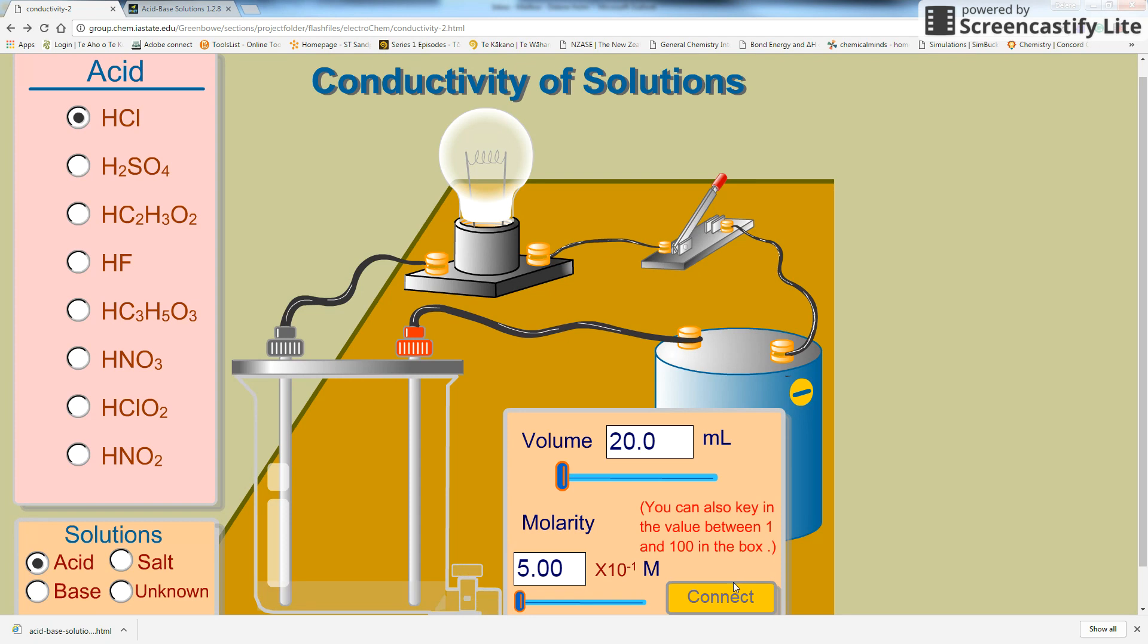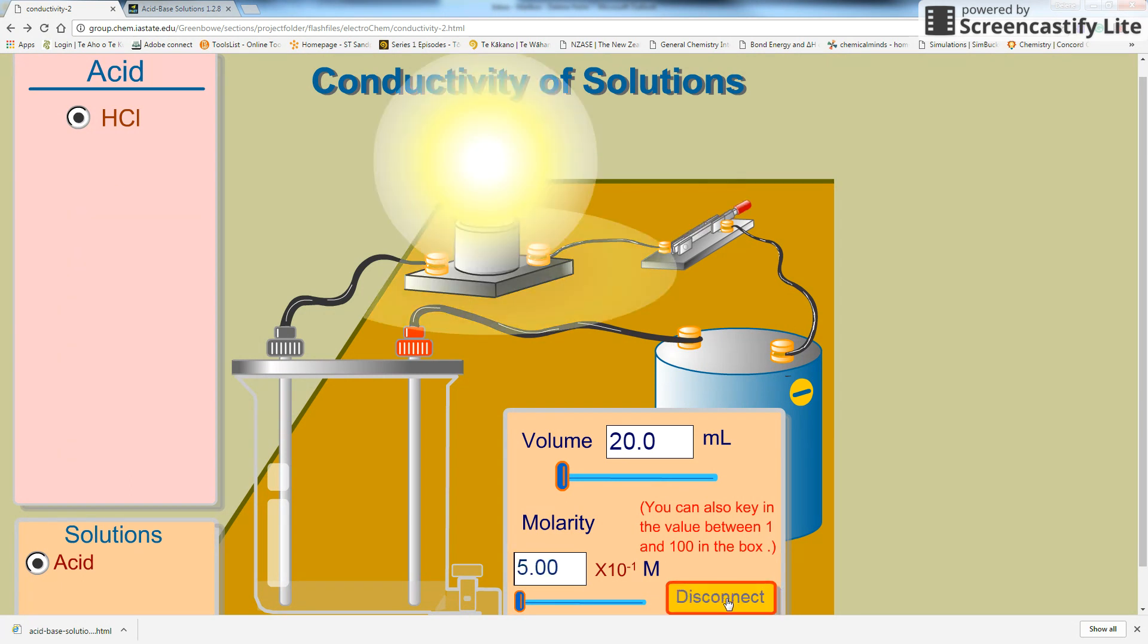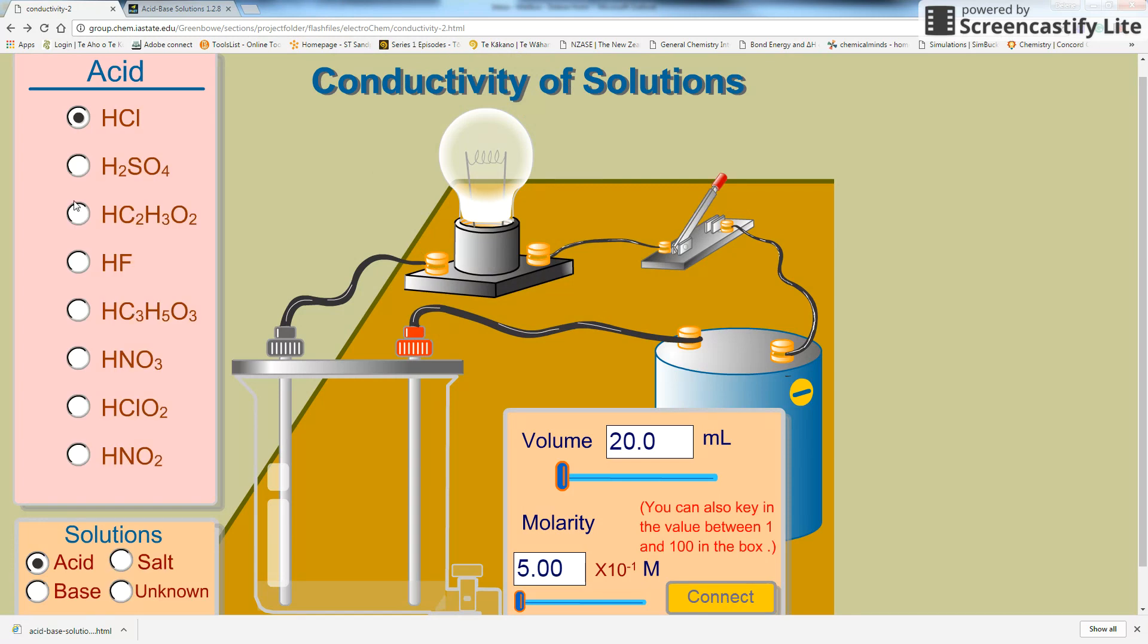And what you do is you can choose an acid to find out if it's a strong acid, and if it is, the light bulb will glow brightly. Or if it's a weak acid, then you don't expect the light bulb to glow so brightly. So press connect, and you can see it's glowing brightly. Disconnect, choose another acid, connect up.